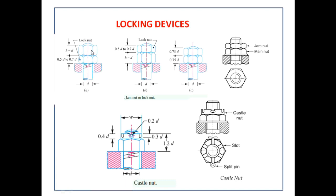When you rotate the lock nut in a clockwise direction, proper friction develops between the surfaces of the nut and lock nut, fixing it at that particular position so there is no chance of loosening. Different arrangements are present: the lock nut can be on the outside with the regular nut inside, or the lock nut can be inside with the regular nut on the outside. These are the different cases for jam nut or lock nut arrangement.